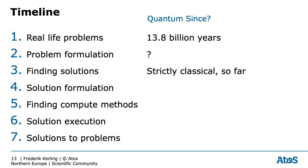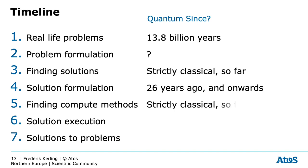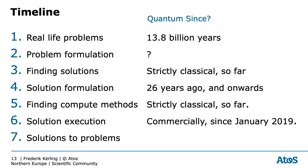I cannot exclude that in the future we'll have some sort of a quantum hybrid brain implanted in ourselves. Solution formulation is about 26 years ago, from 1994, when Peter Shor devised his first useful quantum algorithm for real-life problems. There were other quantum algorithms, but they didn't actually solve real-life problems. Finding compute methods is strictly classical, because we are simply limited to our human capacity. The solution execution is available since about 2019, when IBM provided the first commercially available quantum computer. Solutions to problems exist for about 60 years, since we first started using semiconductors with quantum knowledge. Semiconductors in themselves are much older, but this is the first time we actually started to use quantum technology to provide solutions to our computing problems.